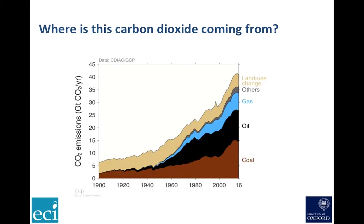The sources of fossil carbon are very well characterised from both national and industry records. Up until the 1950s it was predominantly coal, while oil and gas have taken off more recently. Land use change, such as deforestation, exceeded total fossil fuel emissions also until about the 1950s, but has since declined in both absolute terms and as a fraction of the total.